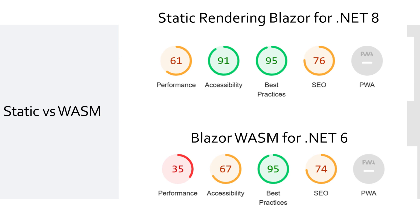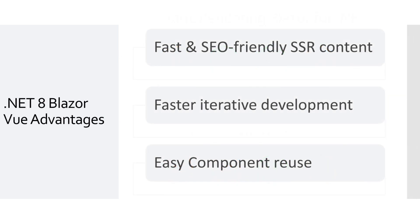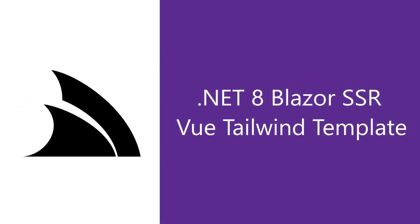To sum up, the advancements in Blazor for .NET 8 — particularly enhanced navigation and the Blazor View template — mark a significant stride in web app development. These improvements facilitate the creation of faster, more responsive, and SEO-friendly applications catering to both developers and end users. The evolution of the Blazor Diffusion project exemplifies these benefits, showcasing how Blazor now supports a wider array of development styles and performance needs, making cutting-edge web applications more accessible than ever.